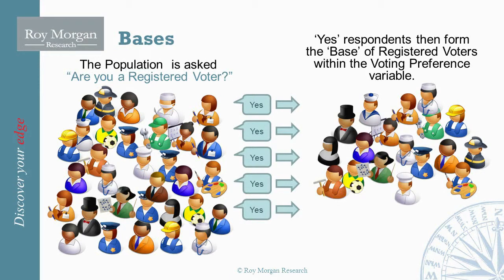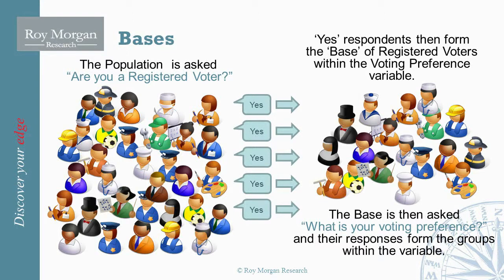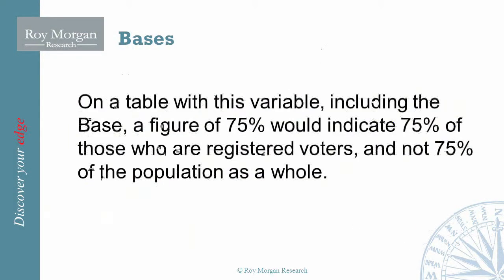Using the registered voters base, this becomes the new population from which percentages within the variable are calculated. On a table with this variable, a figure of 75%, for example, would indicate 75% of those who are registered to vote, and not 75% of the population as a whole.